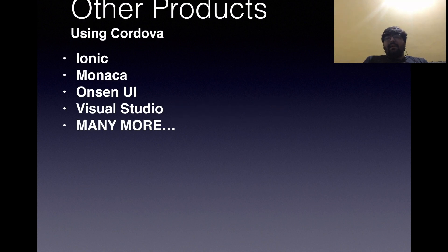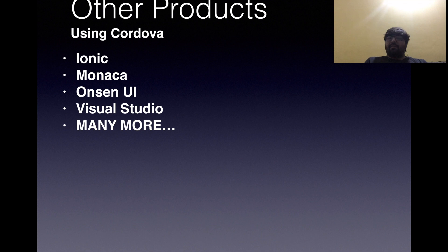That covers the history and the difference between PhoneGap and Cordova. There are other products as well that use Cordova as their base code — the most famous of them is Ionic. We also have Monaca, OnsenUI, Visual Studio, and many more.